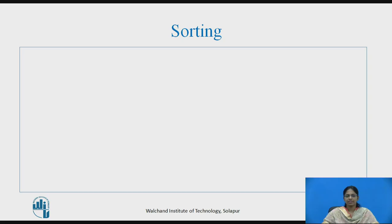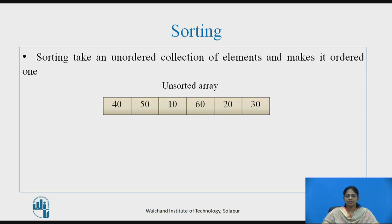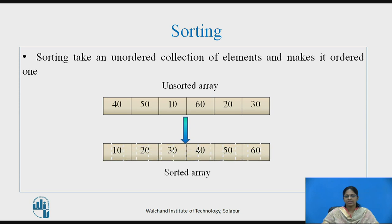Let us see what Sorting is. Sorting takes an unordered collection of elements and makes it an ordered one. For example, an unsorted array is taken as input and sorting makes it an ordered one. So sorting is nothing but making an unsorted array into a sorted one.